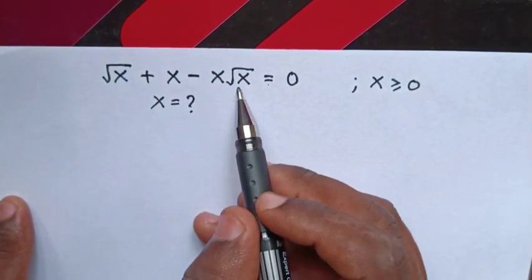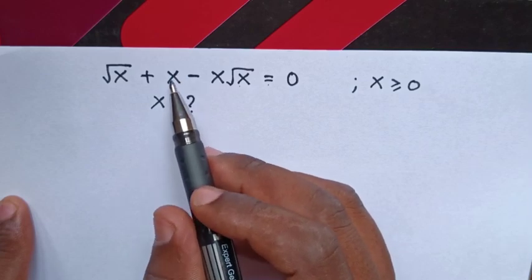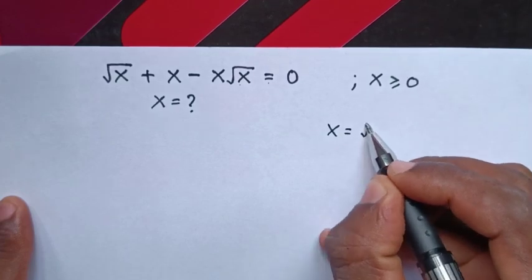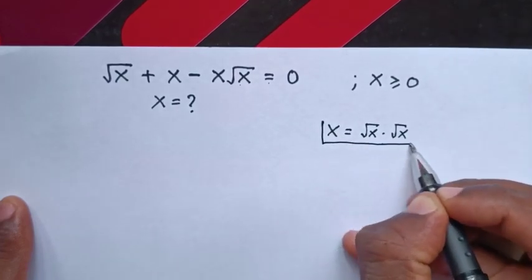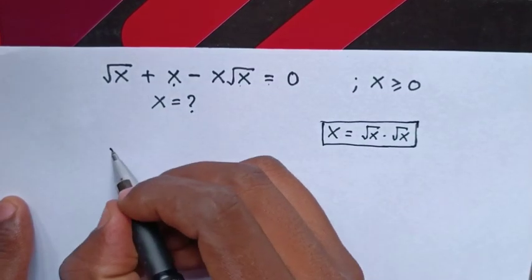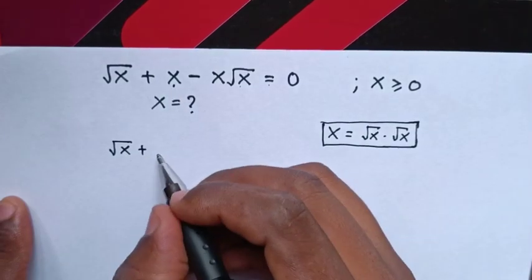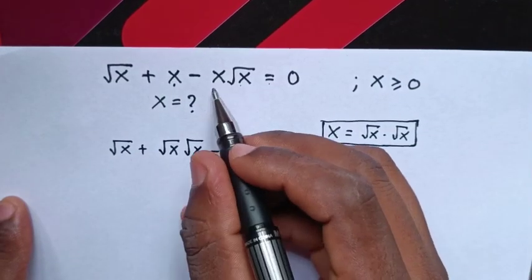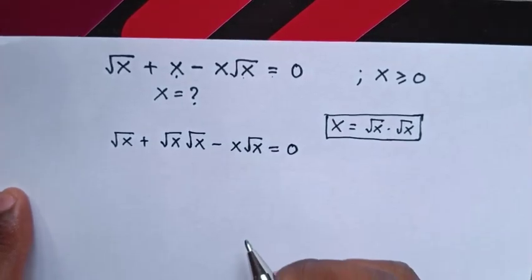You can see square root of x appears here and here. To rewrite x in terms of square root of x, we use x equals square root of x times square root of x. We substitute this into our equation: square root of x plus square root of x times square root of x minus x times square root of x equals 0.